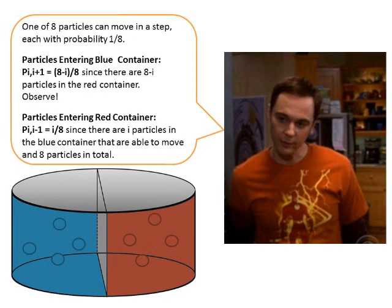One of 8 particles can move in a step, each with probability 1 over 8. Particles entering the blue container have a probability of 8 minus i over 8, since there are 8 minus i particles in the red container. Particles entering the red container have a probability of i over 8, since there are i particles in the blue container.